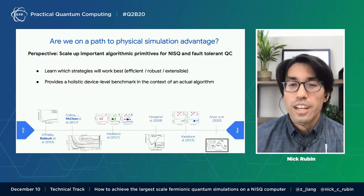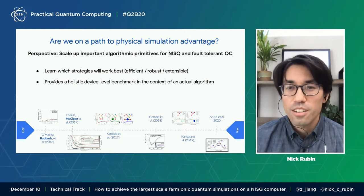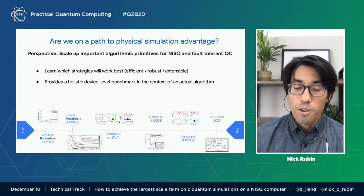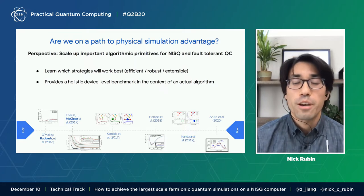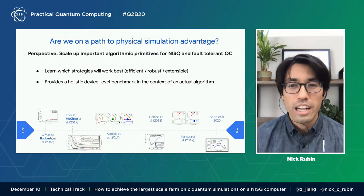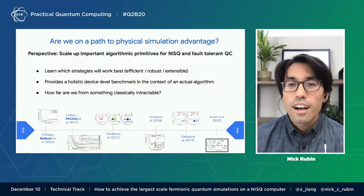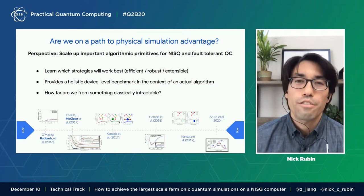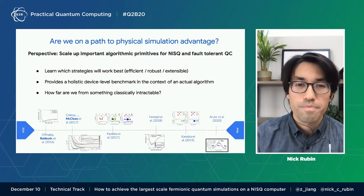We'd also like to be able to provide our experimental colleagues with holistic device-level benchmarks for an actual algorithm that maybe doesn't have all of the symmetries of a random quantum circuit. And of course, to benchmark how far we are from something that is actually classically intractable.